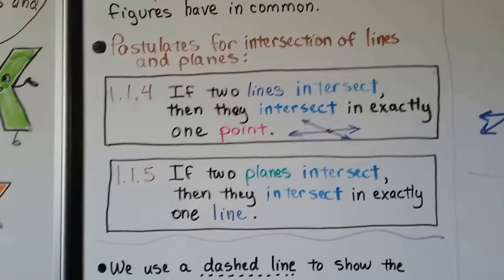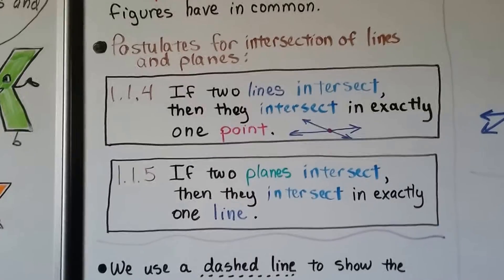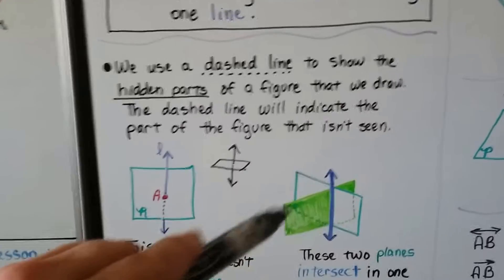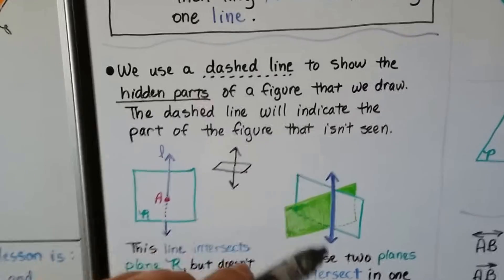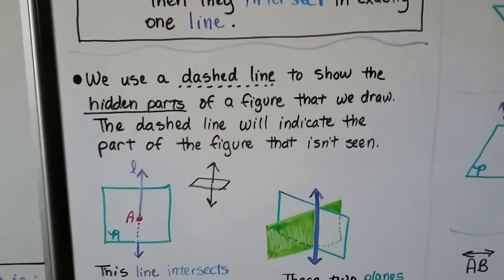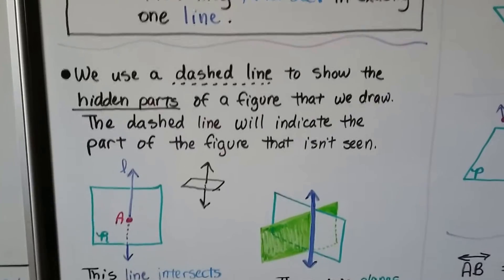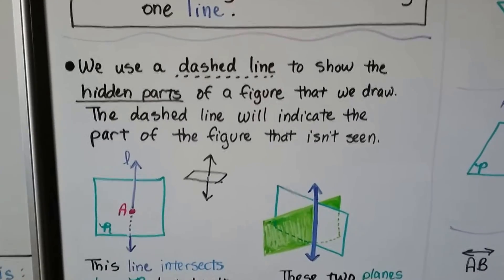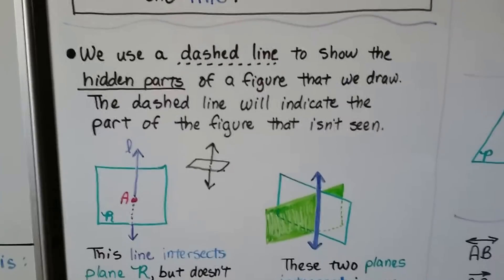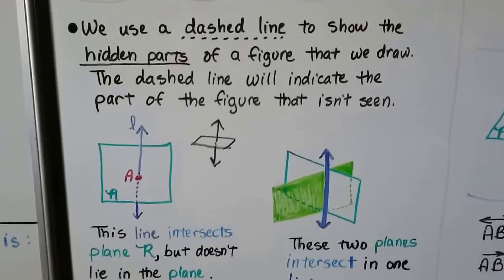And if two planes intersect, then they intersect in exactly one line. So if two planes are intersecting, they intersect at one line. We use a dashed line to show the hidden parts of a figure that we draw. The dashed line will indicate the part of the figure that isn't seen.